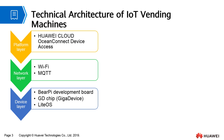The platform layer uses the Huawei Cloud OceanConnect device access service. The network layer uses Wi-Fi and MQTT for communications. The device layer uses the BarePi IoT development board, which is equipped with the GD32F303A GT6 chip and runs LightOS.